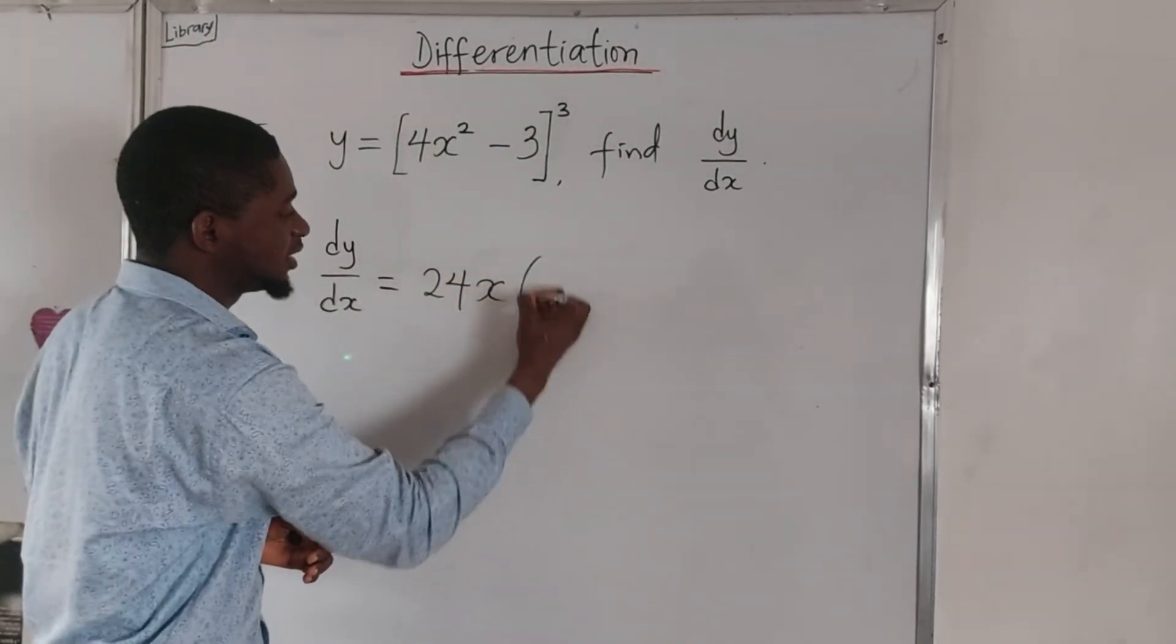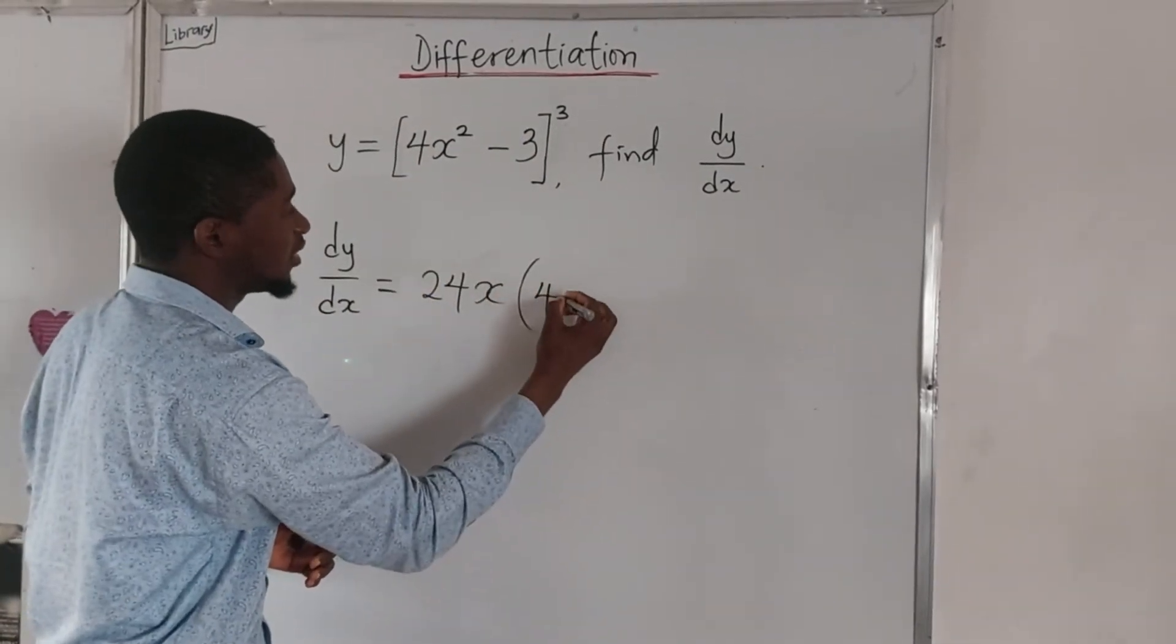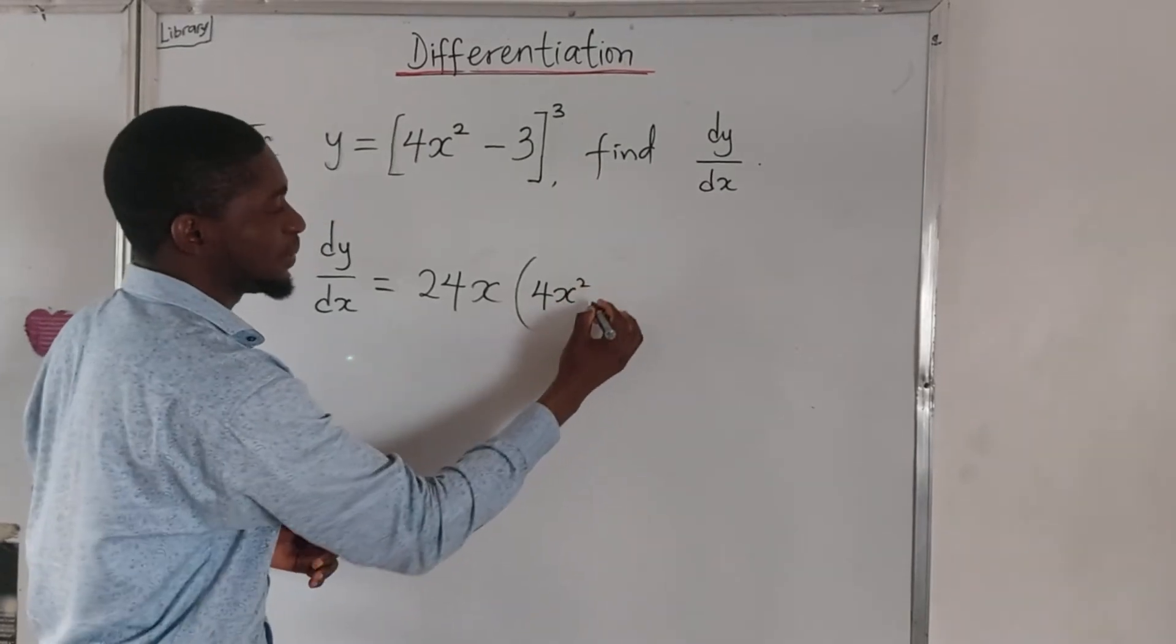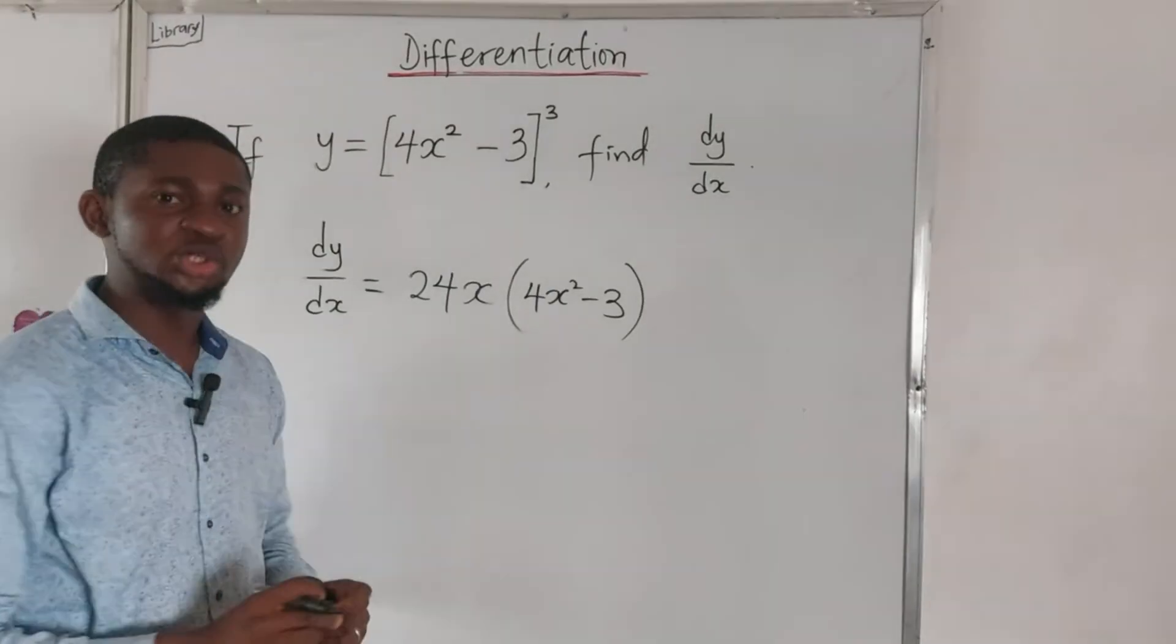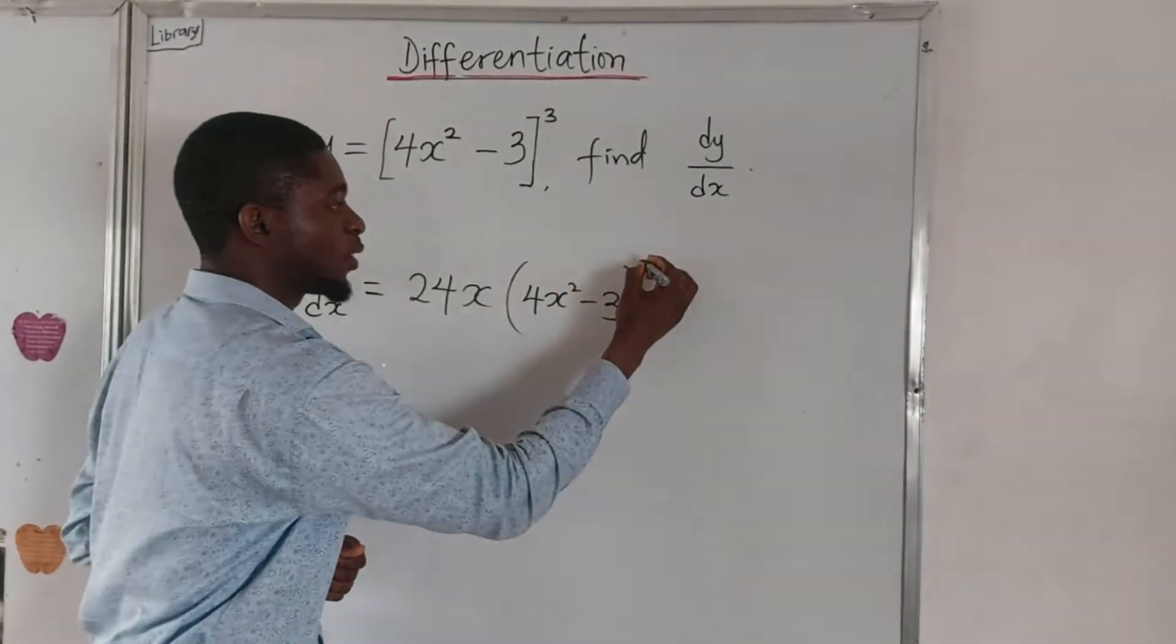All right, so for this, we then bring in the same function again: 4x² - 3. Now, instead of power 3 here, the power is going to be reduced by 1, that will be power 2.